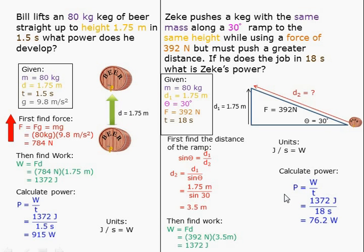I can then find power, which is work over time. 1,372 joules divided by 18 seconds equals 76.2 watts.